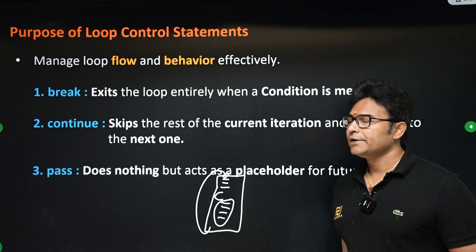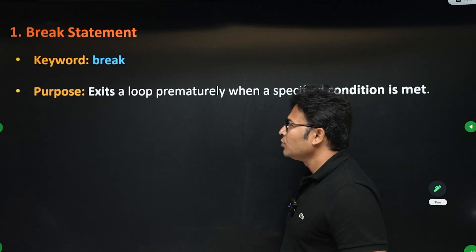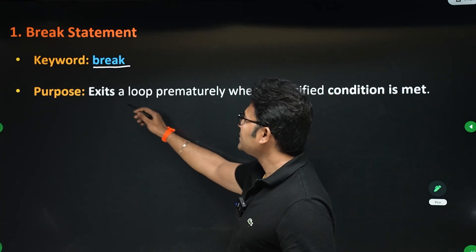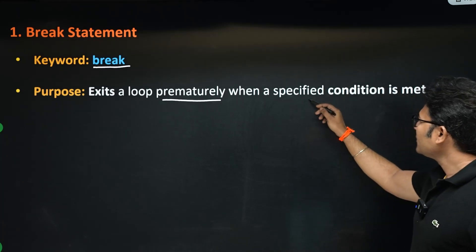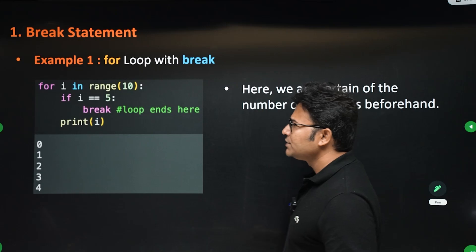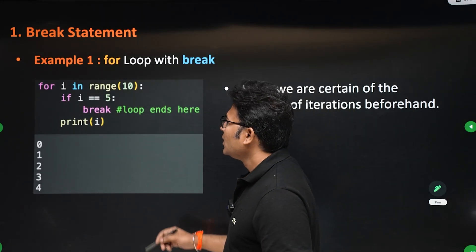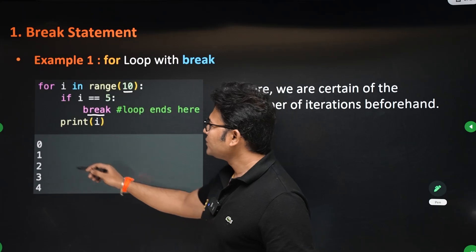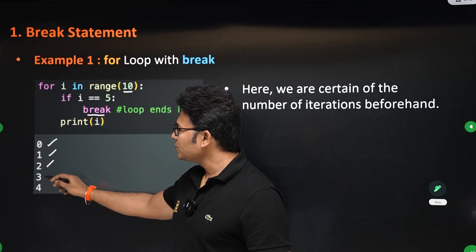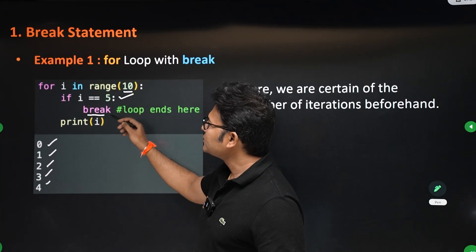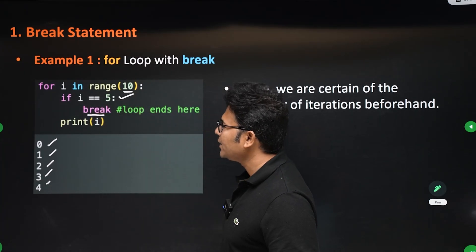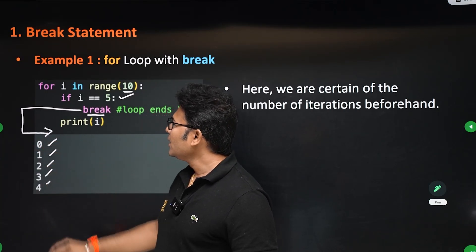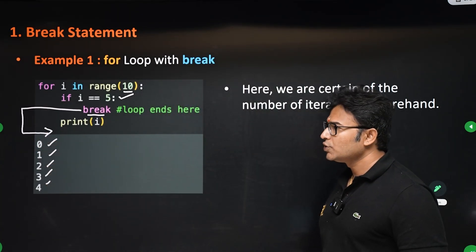Break is useful when you want to exit a loop permanently upon meeting some condition. For example: for i in range(10), when i equals 5, break. For 0 through 4 it will execute, but when i equals 5 the break is hit, it comes out of the loop, and executes the next statement after the loop.